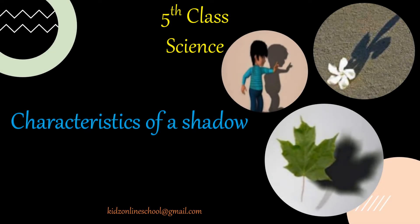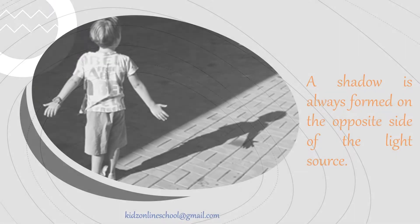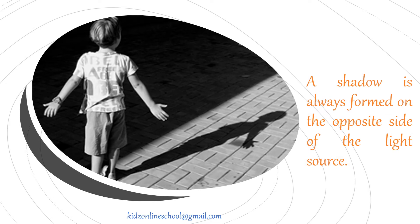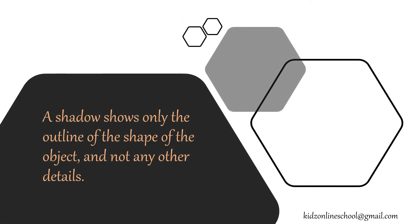About Characteristics of a Shadow. A shadow is always formed on the opposite side of the light source. A shadow shows only the outline of the shape of the object and not any other details.